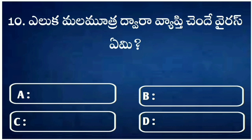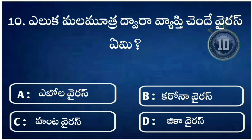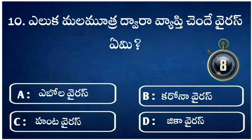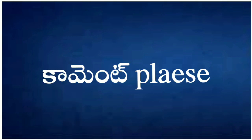Question number 10. Your question. Option A. Option B. Option C. Option D. Your time starts now. Time up. Answer is Option C. If you answered all the questions correctly, comment your score in the comment box below.